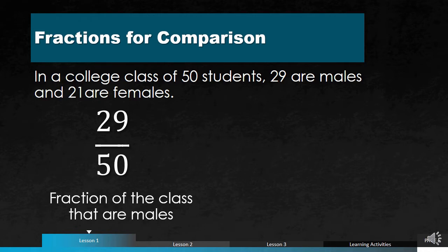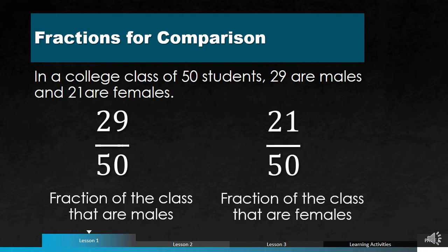What about if we express the number of females in terms of a fraction? In that case, we can have 21 over 50, where 21 is your numerator and 50 is your denominator.